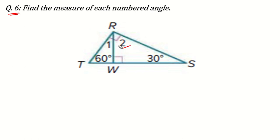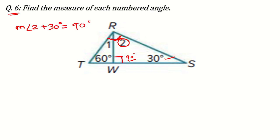First of all, try to understand the meaning of this sign. This sign means the angle is 90 degrees. The same goes for angle R — this complete angle is 90 degrees, and it is divided into two parts: angle 1 and angle 2. This one part is 30 degrees, and the full angle is 90 degrees.